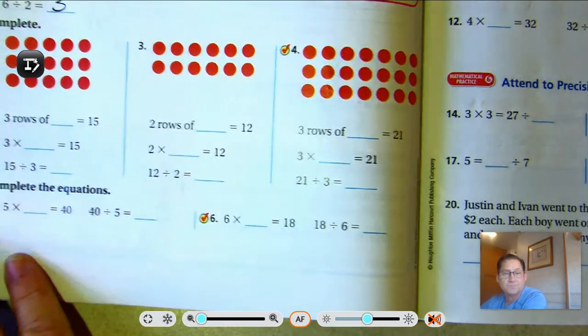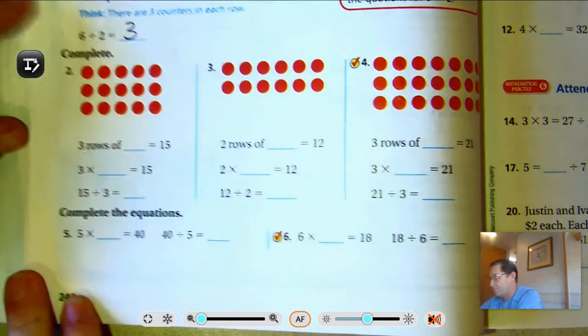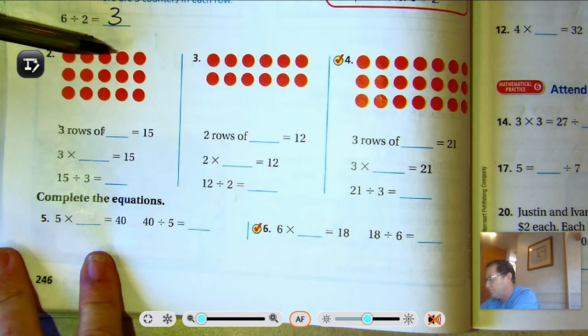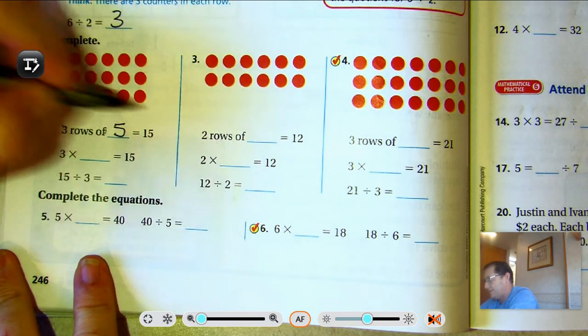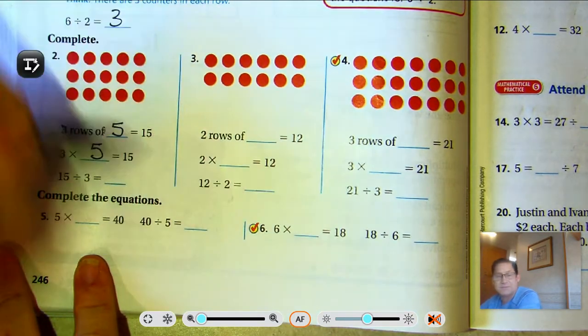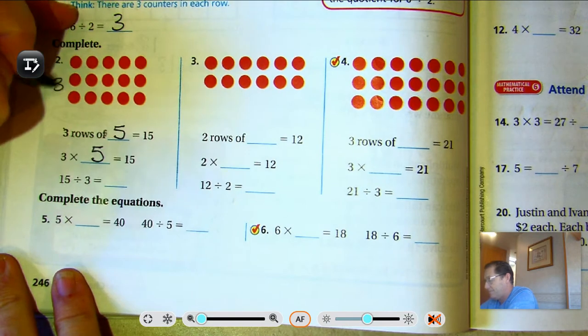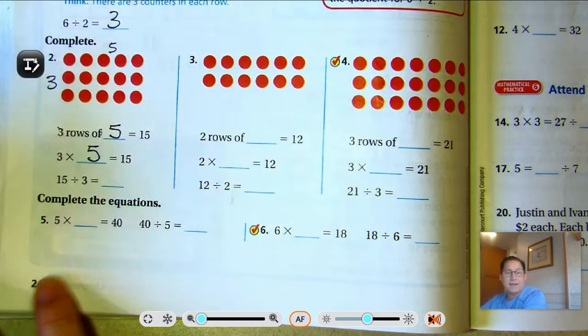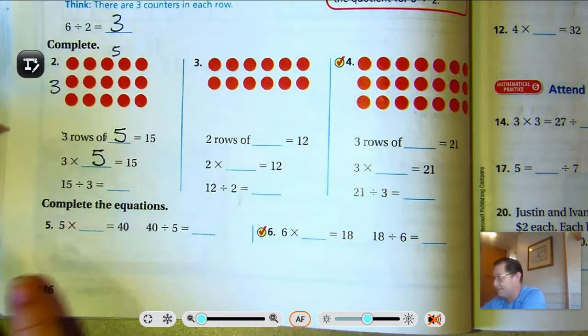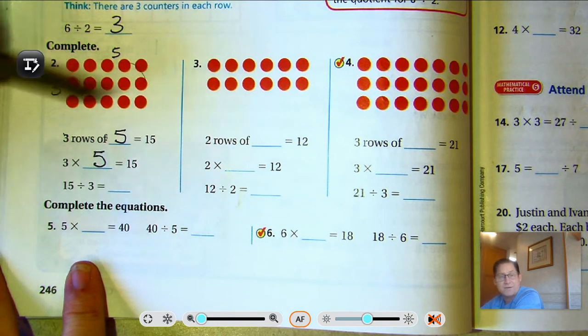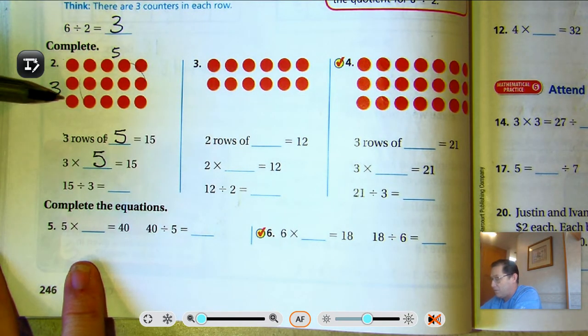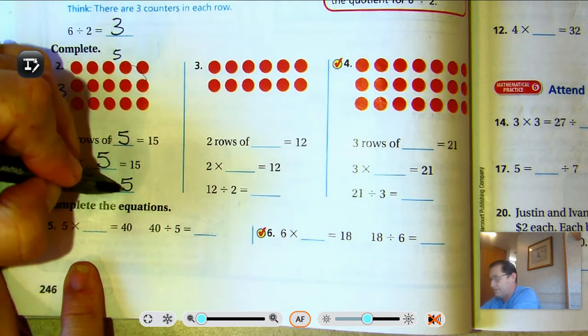Number two. So we have three rows of five. Three rows of five is 15. That's the same as saying three times five. And if three times five is 15, then 15, the total number of counters, divided by three rows, we'd have five in each row.